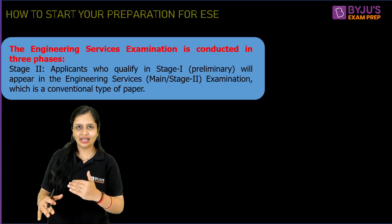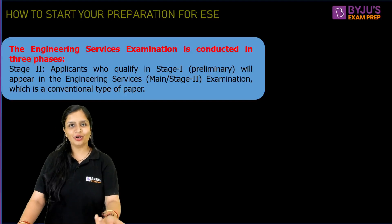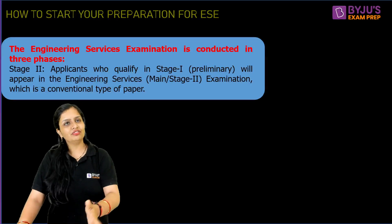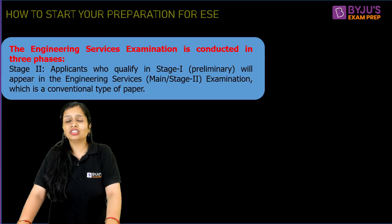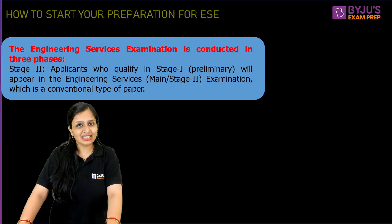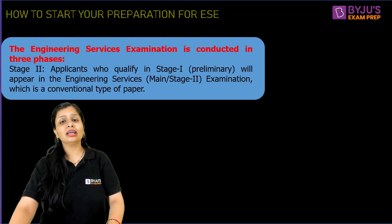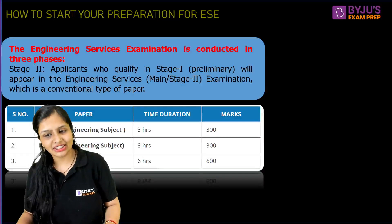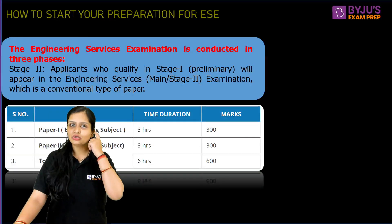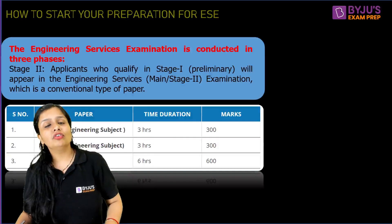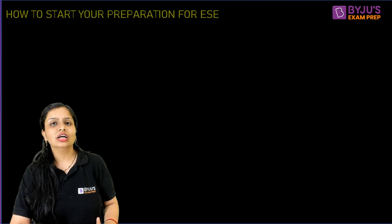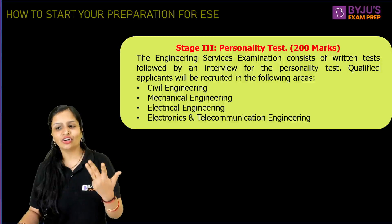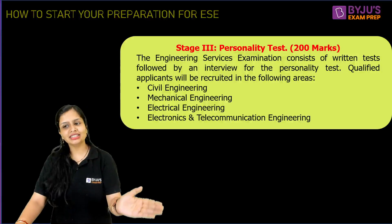After clearing Prelims, the next step is Mains. Serious aspirants prepare for both simultaneously. In Mains, Paper One and Paper Two are 300 marks each and three hours each — totalling six hours and 600 marks. The papers cover subjects for various engineering disciplines: Civil Engineering, Mechanical Engineering, Electrical Engineering, and Electronics and Telecommunication Engineering.